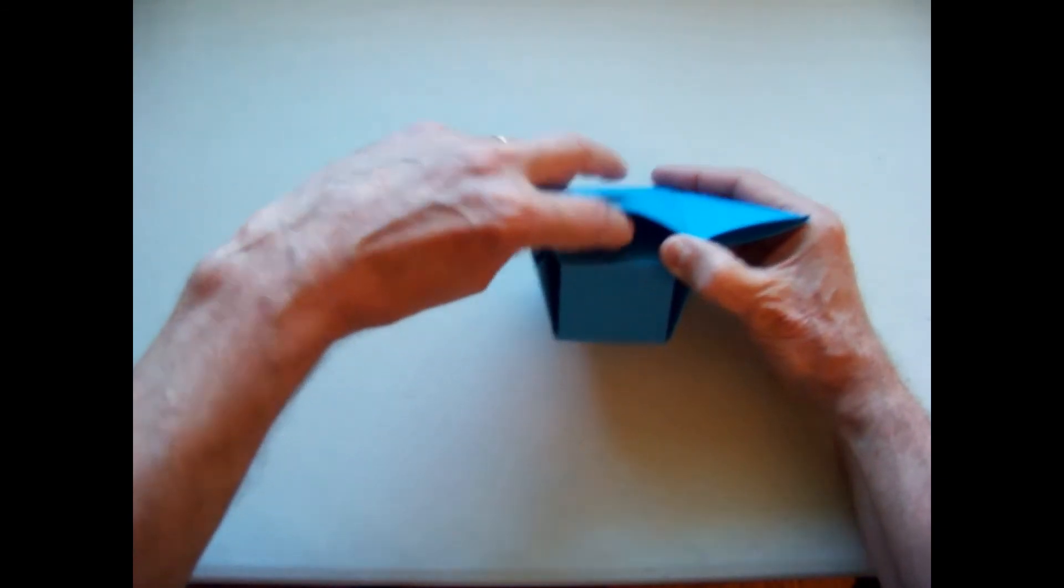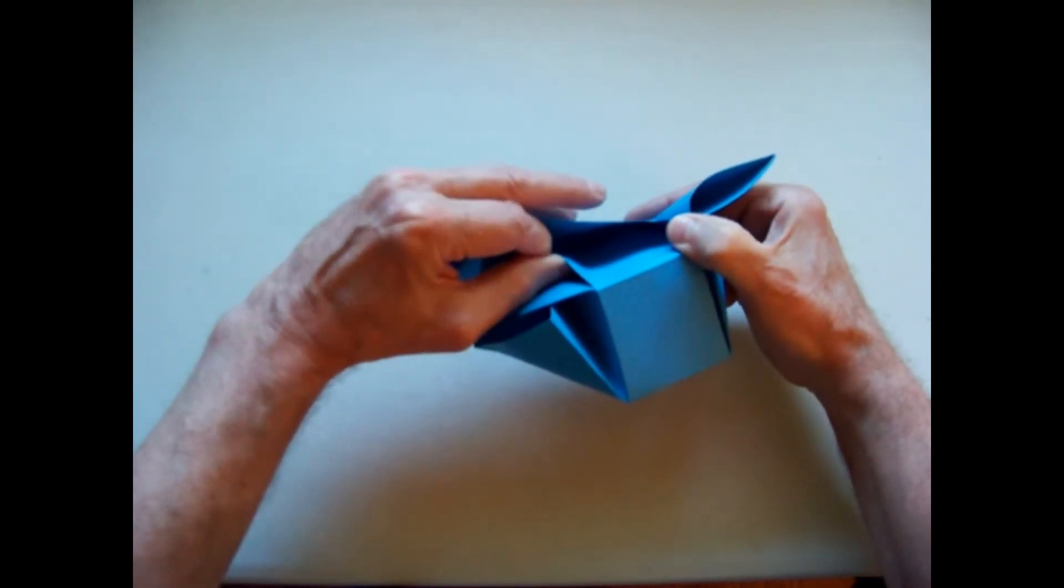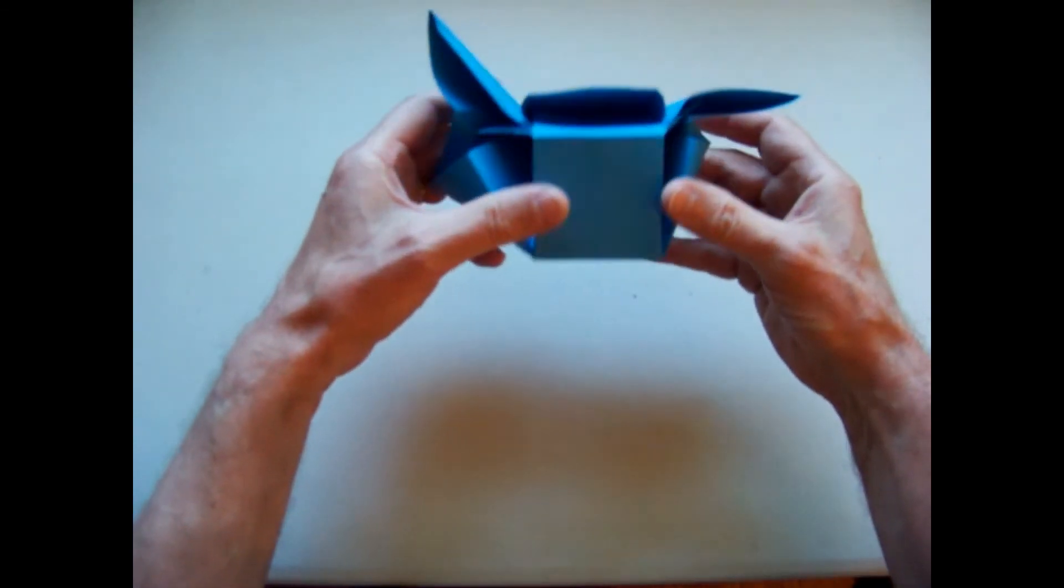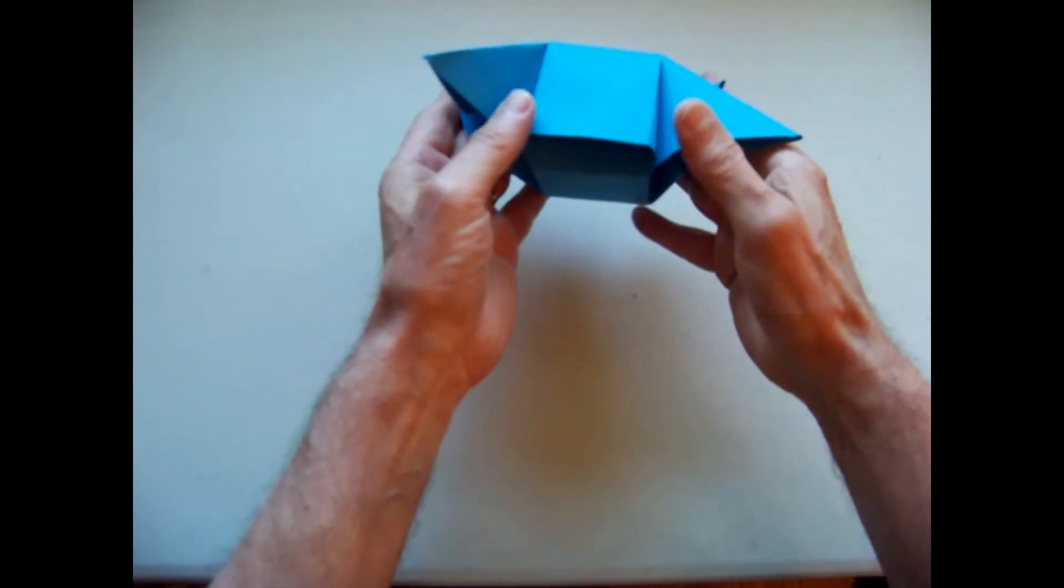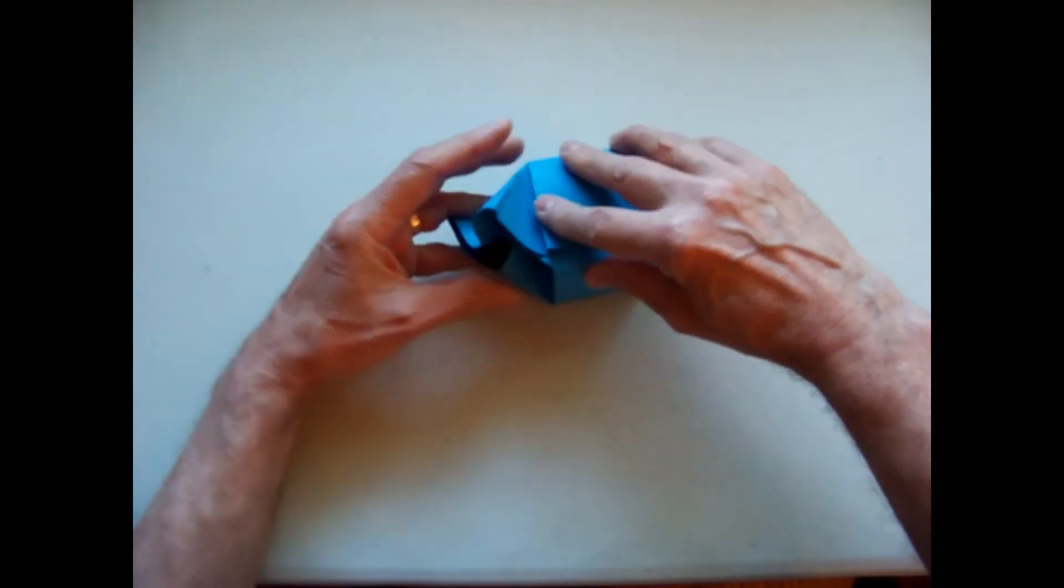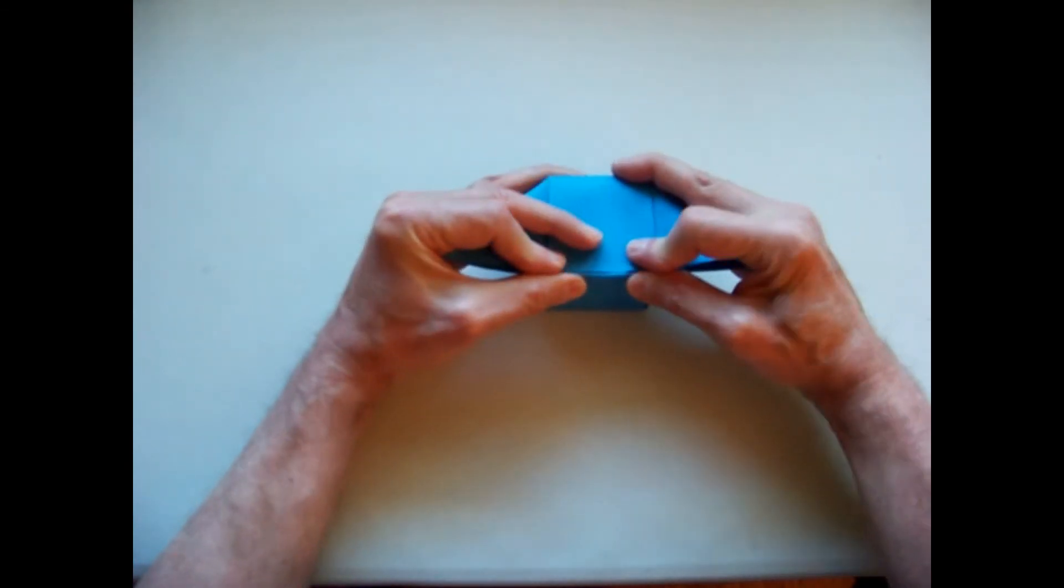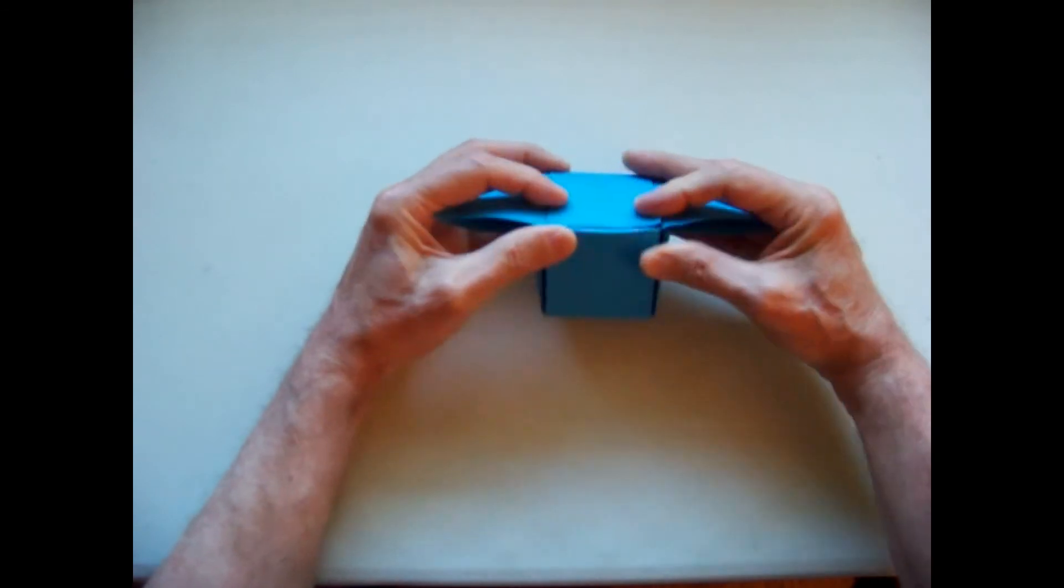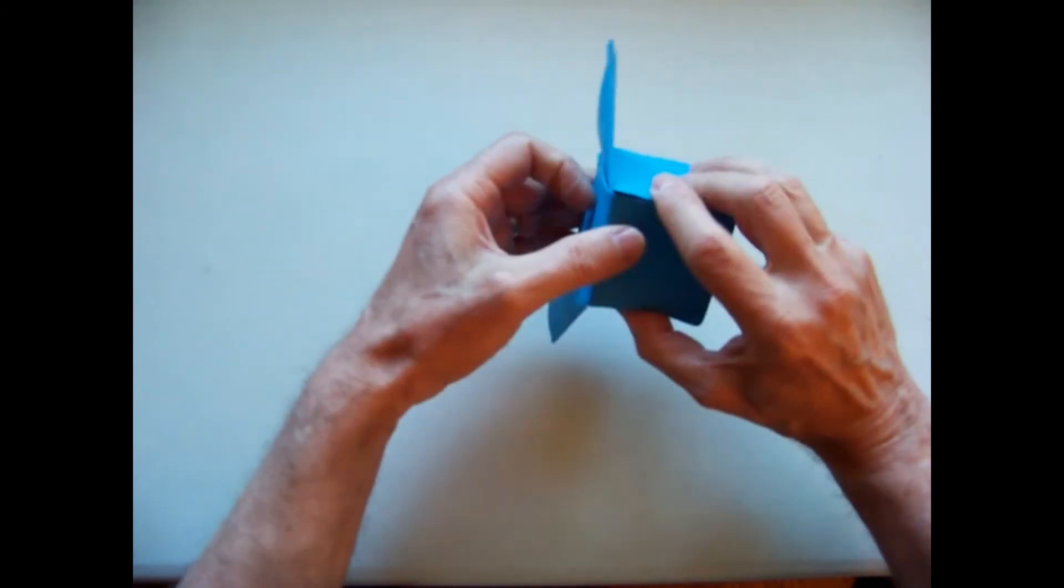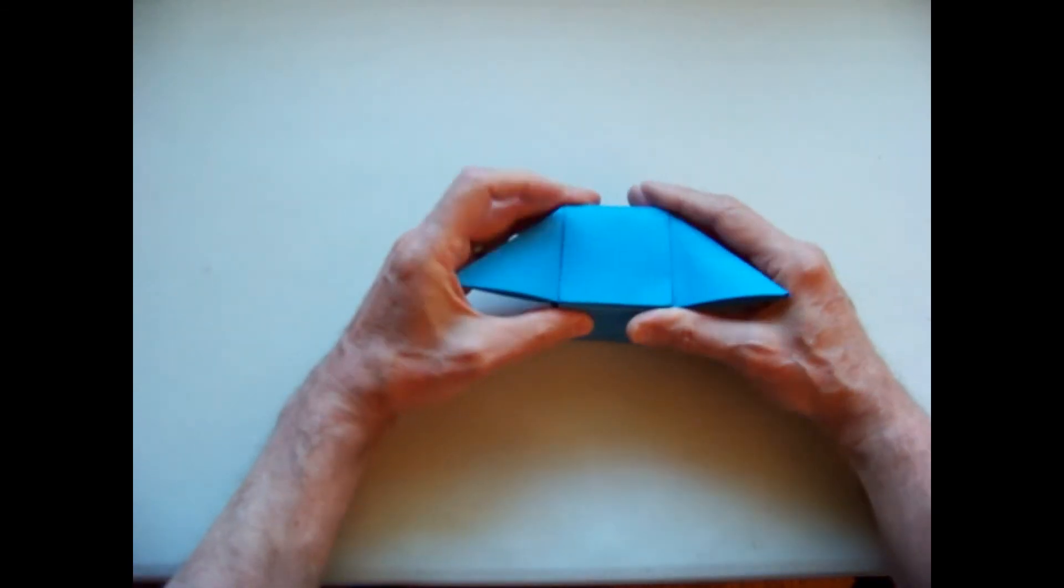We repeat the process on the other side. Open up a pleat on the bottom. Insert the top pleat inside. Bring it together part way. You can see how it's starting to come together. Now we carefully work the pleats together. The box begins to become very stable. The pleats are nested at this point.